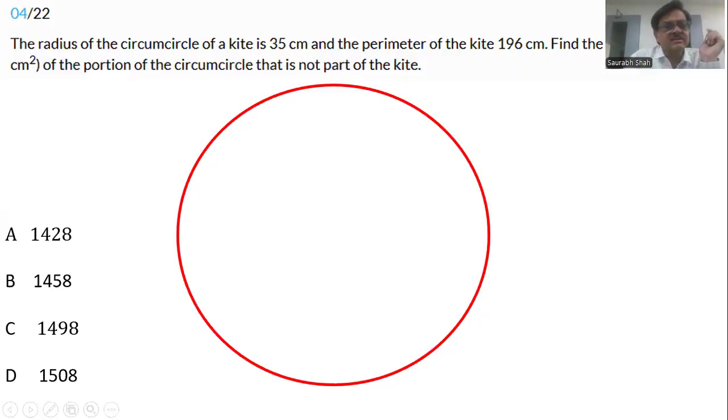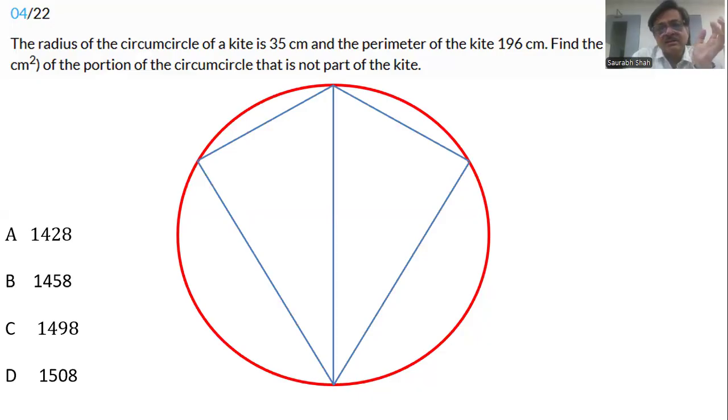The first question that I have selected is question number four. The radius of the circumcircle of the kite is 35. Now remember all kites may not be able to be circumscribed by a circle, but this is given as the data. The longer diagonal of the kite will become the diameter of the circle. The radius is given as 35, which means the diameter now will become 70.